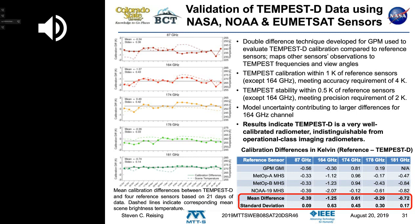The tall pole in terms of error is the 164 GHz channel, which tends to have some model uncertainties about how much the ocean emits. Overall, a conservative group went through this and found that Tempest D is a very well-calibrated radiometer, indistinguishable from the gold standards of GMI and MHS — operational class imaging radiometers.